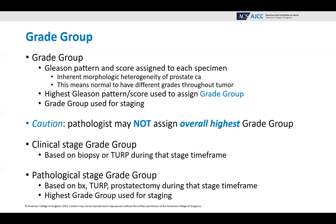Grade group. The grade group is made up of the Gleason pattern and score assigned to each specimen. There is inherent morphologic heterogeneity of prostate cancer, meaning it is normal to have different grades throughout the tumor. The highest Gleason pattern and score should be used to assign the grade group. Grade group is what's used for staging. The clinical stage grade group is based on the biopsy or the TURP during that stage time frame. The pathological stage grade group may be based on the biopsy, the TURP, or the prostatectomy — the highest grade group is used for staging.